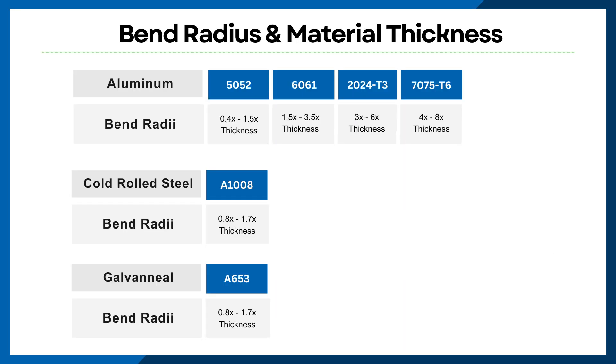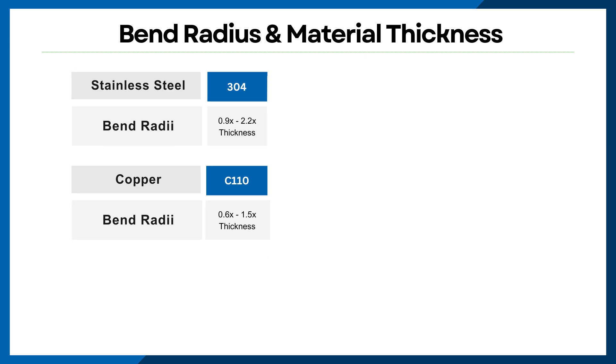So to recap, understanding how bend radius relates to material thickness is important for engineers when designing sheet metal parts and enclosures. When you understand this relationship, you not only ensure proper structural integrity of your components, but also the aesthetic appeal. Remember, if you have any doubts about the ideal bend radii for your projects, reach out to your account manager — they're here to help you find the perfect solution.